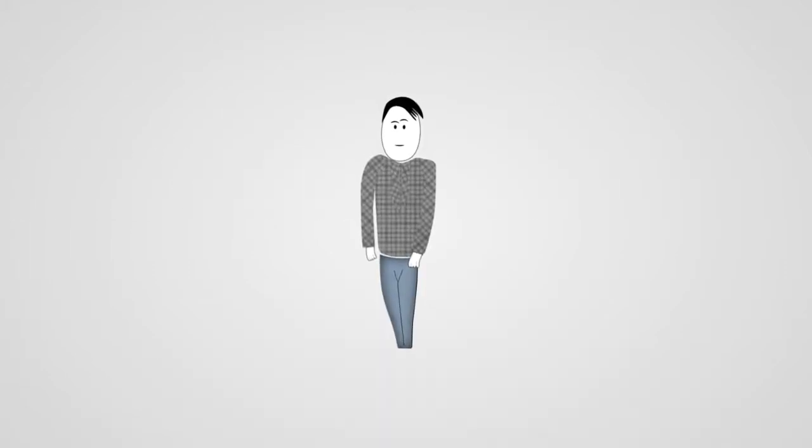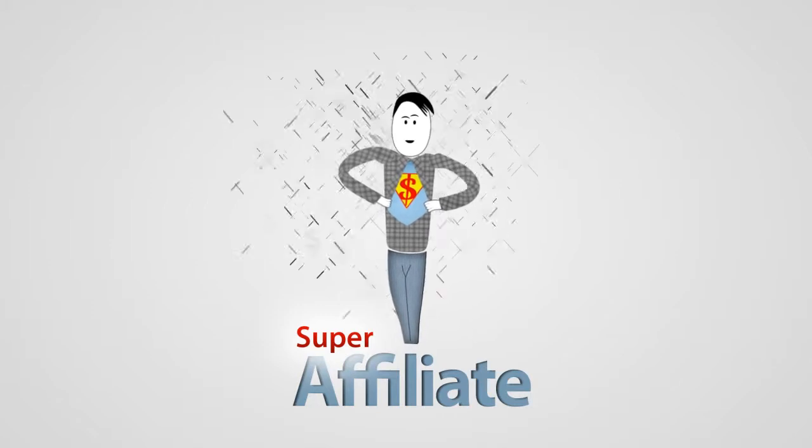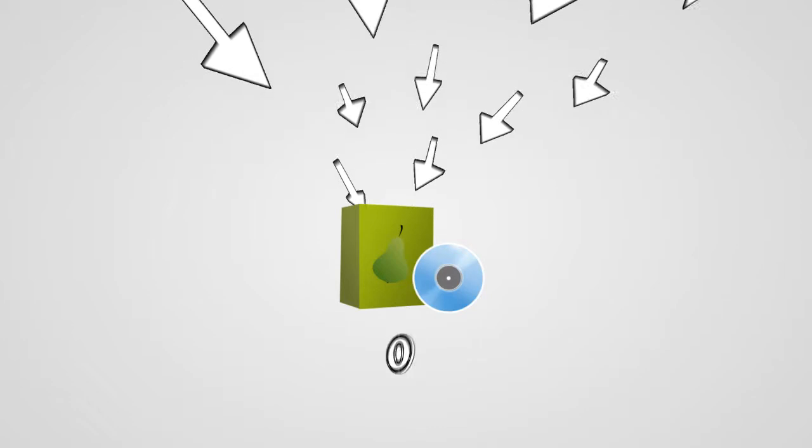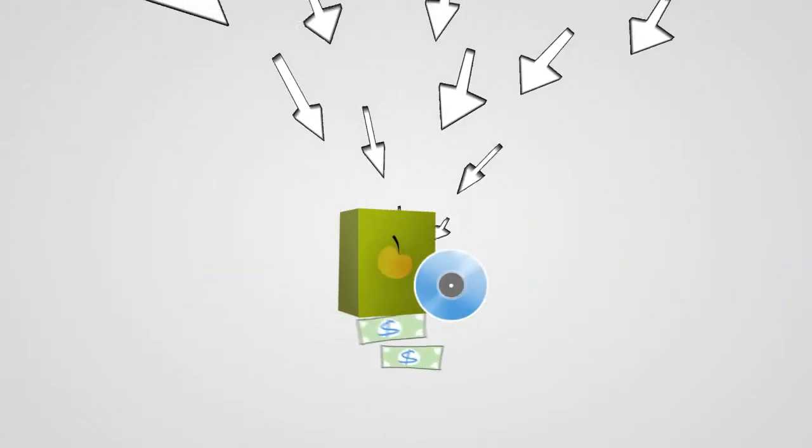Jim is what we like to call a super affiliate. He makes a lot of money online, but he's frustrated because the products he's been promoting just aren't converting anymore. And it seems that the ones that do convert only pay out a few dollars per sale.